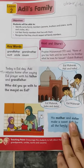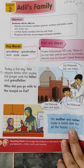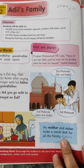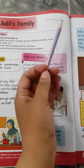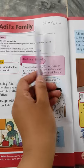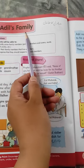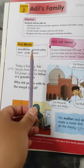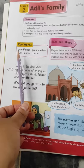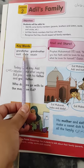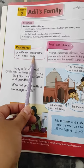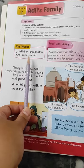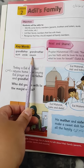Lesson number 2 is Aadil's Family — Aadil Ka Khan Daan. Its key words are: Grandfather, Grandmother, Aunt, Uncle, Cousin.